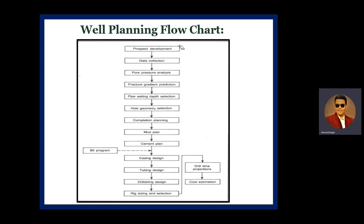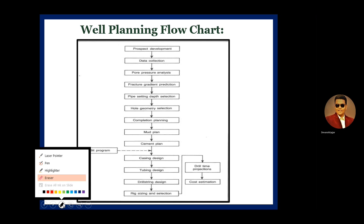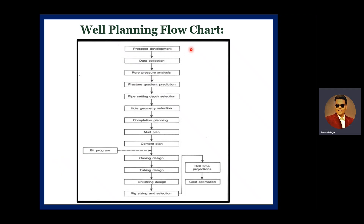The well planning flowchart begins with prospect development — identifying exactly which area of the block contains commercial hydrocarbon. Next is data collection, based on seismic data and geological data. From drilling wildcat wells we also gather pore pressure data — the formation pressure versus depth — followed by fracture gradient prediction, which is important because if hydrostatic pressure exceeds fracture pressure, abrupt fractures will form in the formation.